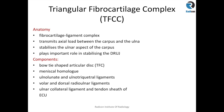The different components of TFCC are the TFC disc, which is a bow tie-shaped structure, the meniscal homolog, ulnar lunate and ulnar triquetral ligaments, volar and dorsal radio-ulnar ligaments, ulnar collateral ligament, and the ECU or extensor carpi ulnaris tendon sheath.